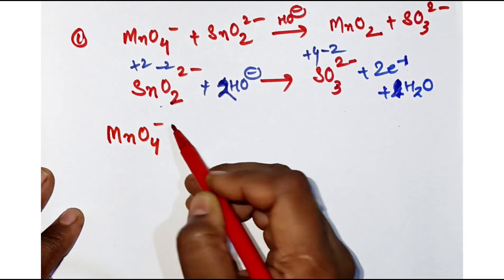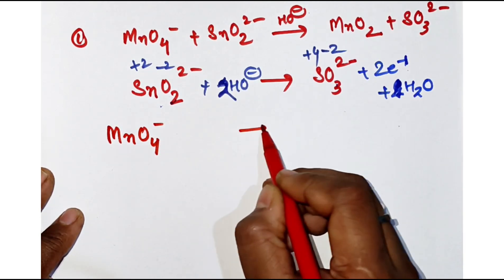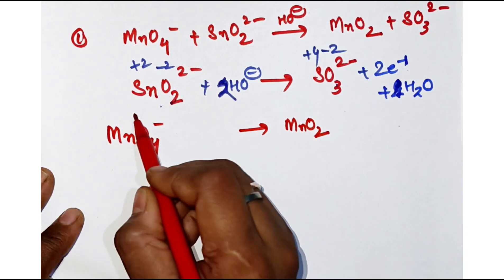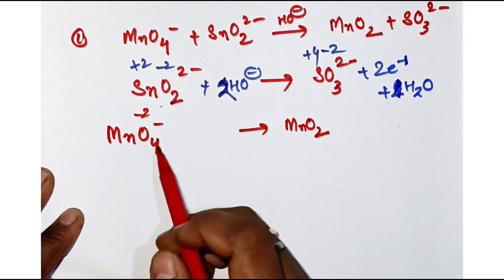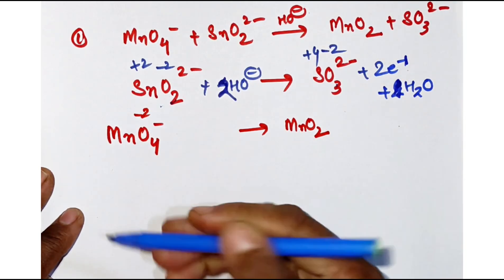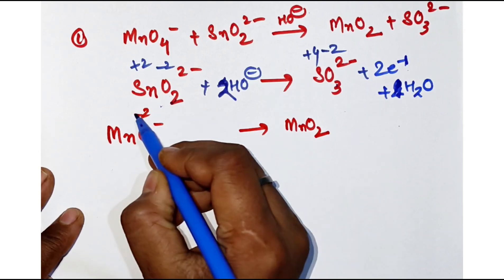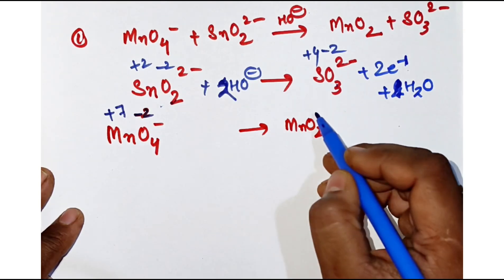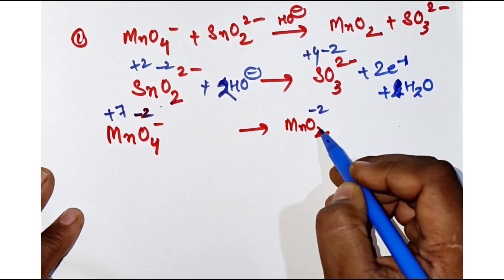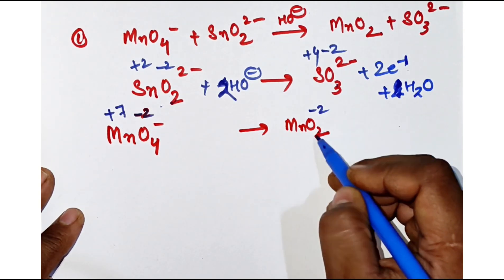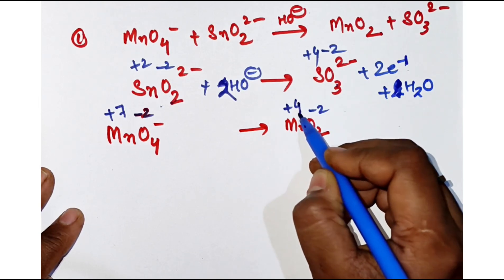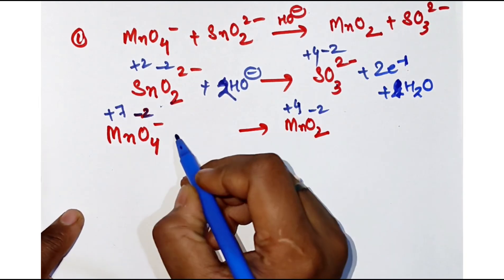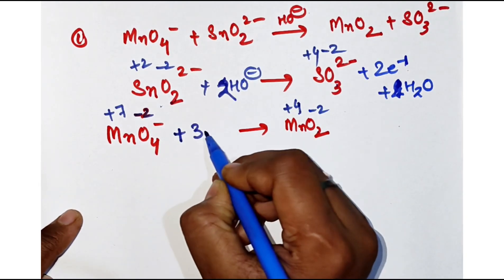The next equation is MnO₄⁻ giving MnO₂. Finding the oxidation number: four twos are eight, minus one gives plus seven on the left. On the right, two twos are four, so it is plus four. So it has gained three electrons to form MnO₂.